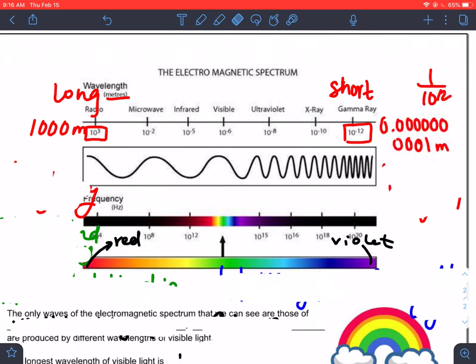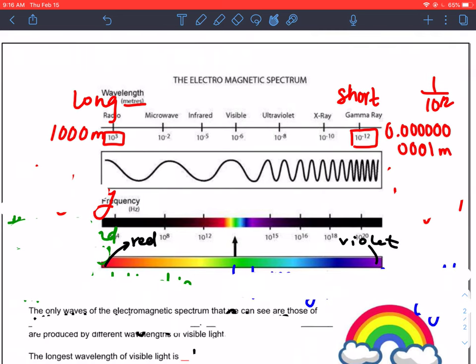They are 10 to the negative 12 in terms of their wavelength, so 0.000000000001 meters. Very, very, very small. These gamma rays are what turn the Incredible Hulk into the Incredible Hulk in the Marvel universe.